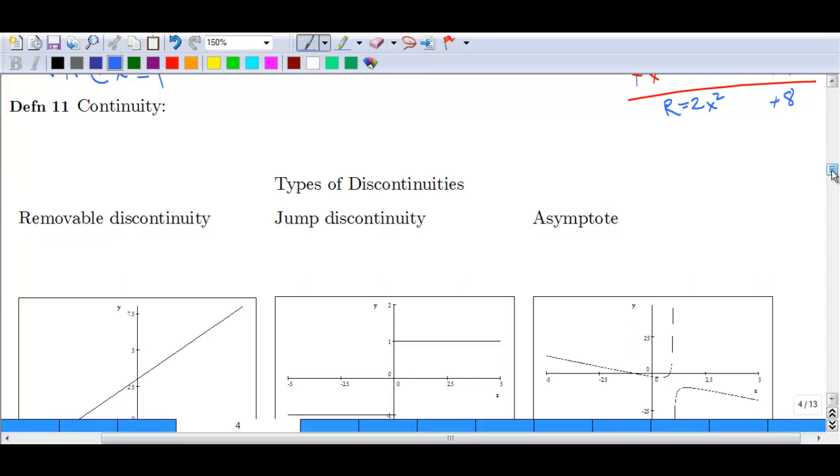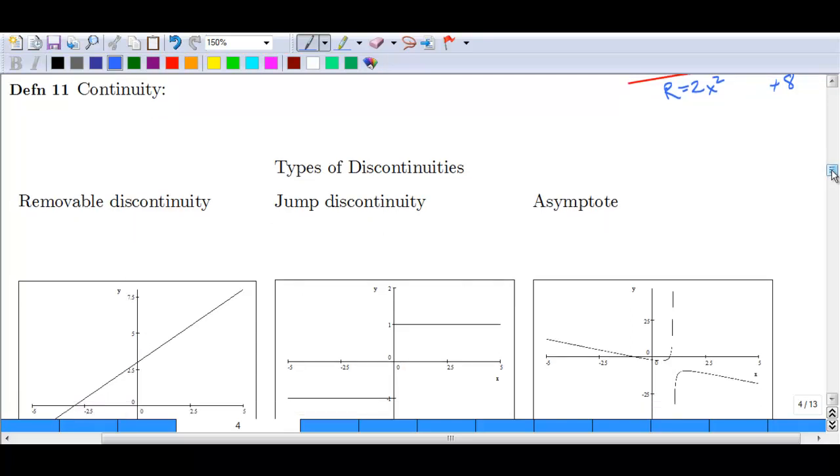The last lesson in this section deals with continuity. Now we've essentially been dealing with continuity so far when we've been discussing asymptotes. We've been discussing how an asymptote creates what is known as a discontinuity. It has a break in the graph.